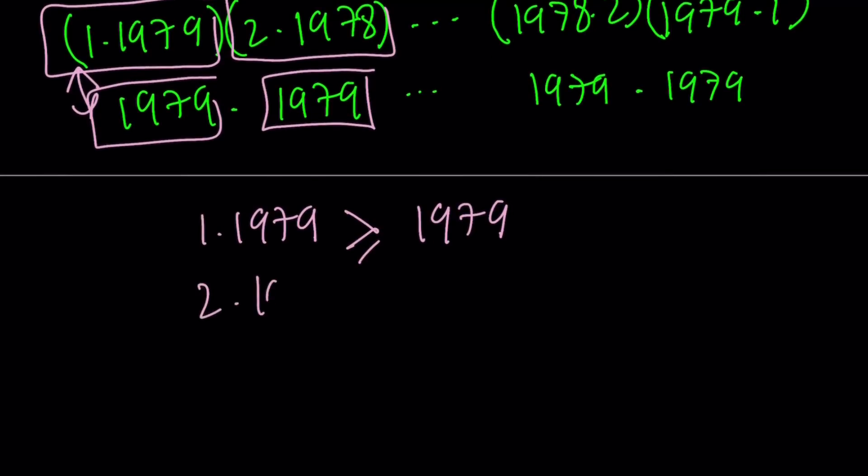What about the second pair? 2 times 1978 is definitely greater than 1979. Come on, you know that - it's close to 4000. And then what about the next ones? They're going to be even larger. But here's the thing.